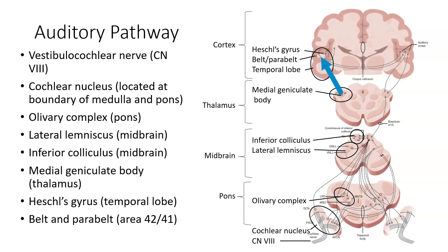From the medial geniculate body in the thalamus, signals travel up into the temporal lobe, first landing at Heschl's gyrus. From there, processing extends out to the belt and parabelt regions around Heschl's gyrus, and then on to the rest of the cortex depending on exactly what is being processed.